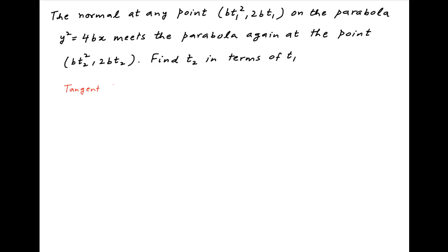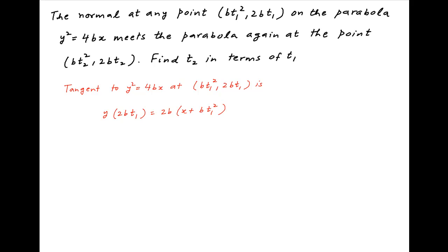The equation of the tangent to the parabola y² = 4bx at the point (bt₁², 2bt₁) can be obtained by replacing y² on the left hand side with y times the ordinate of the point, which is 2bt₁, and on the right hand side replacing 2x with x plus the abscissa of the point, which is bt₁². So the equation of the tangent is y × 2bt₁ = 2b(x + bt₁²).